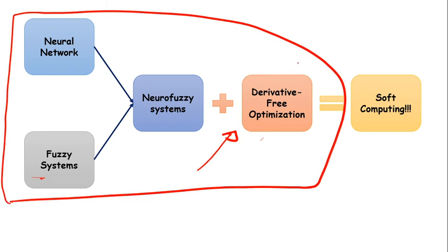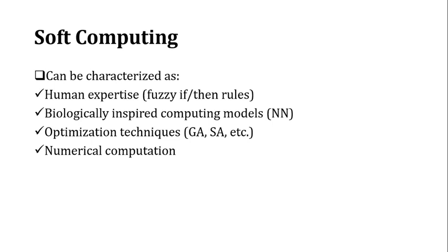Soft computing can be characterized as human expertise because we apply if-then rules, we incorporate biologically-inspired computing models called neural networks, and we also add optimization techniques called genetic algorithms or simulated annealing. Finally, we do some numerical computation.